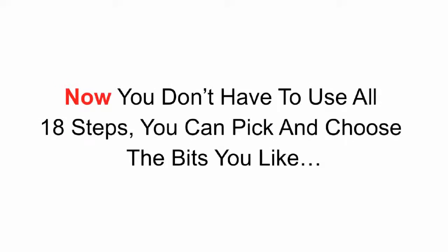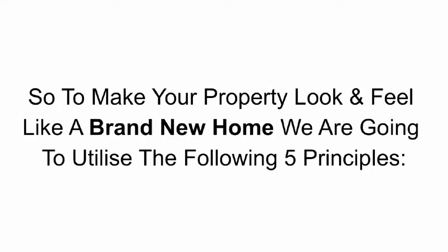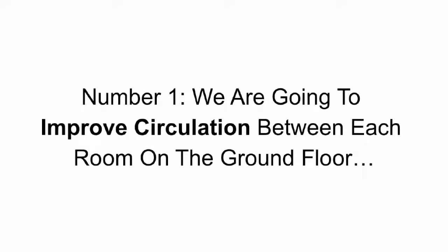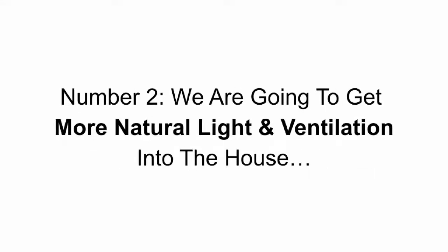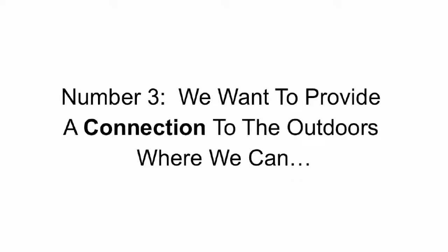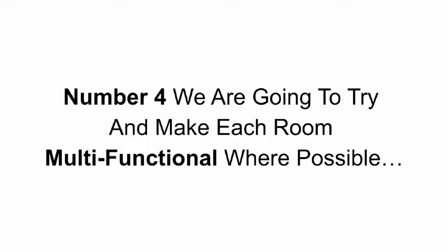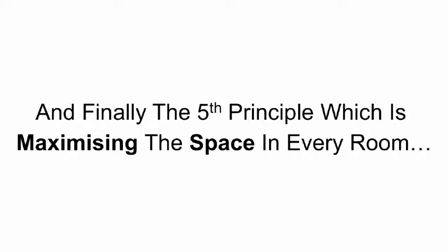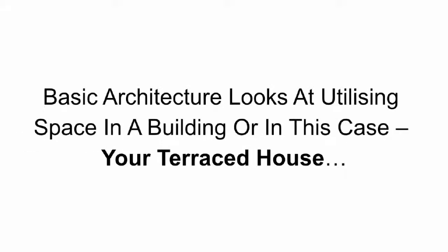You don't have to use all 18 steps — you can pick and choose the bits you like. I'm giving you all 18 for completeness sake. To make your property look and feel like a brand new home we are going to utilise the following five principles. Number one, we are going to improve circulation between each room and each floor as a whole. Number two, we are going to get more natural light and ventilation into the house. Number three, we want to provide a connection to the outdoors where we can. Number four, we are going to try to make each room multifunctional where possible. And finally the fifth principle is maximising the space in every room — we are going to claw back any extra square foot of space where possible.